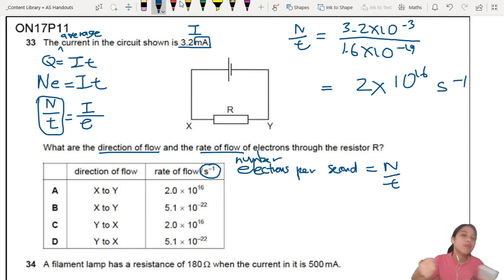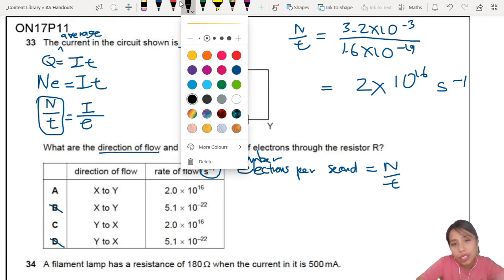Basically, it means electrons per second, but there's no unit for number of electrons. So we look at the answers. Aha, B is out, D is out. Now then comes another question. This is a circuit, right? Which direction is the electron flowing? Hmm.